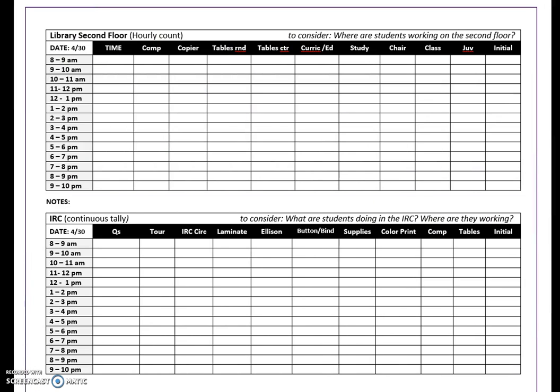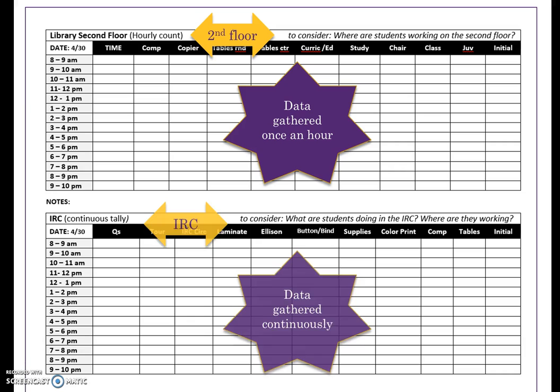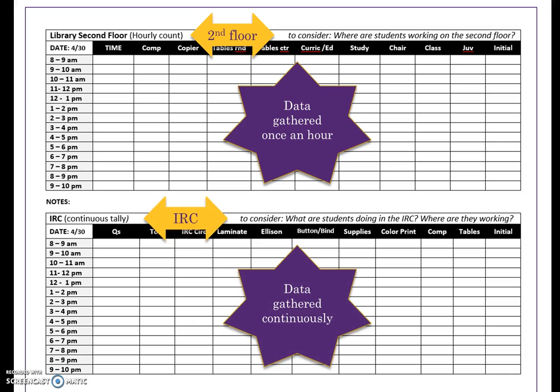A worksheet is provided for each day of the month, and each worksheet contains two usage chart areas. The library's second floor data is gathered once an hour and collected in the top chart; its focus is where students are working on the second floor. IRC data is gathered continuously and collected on the bottom chart; its focus is what students are doing and what resources are being used.